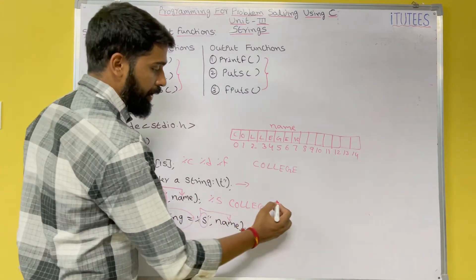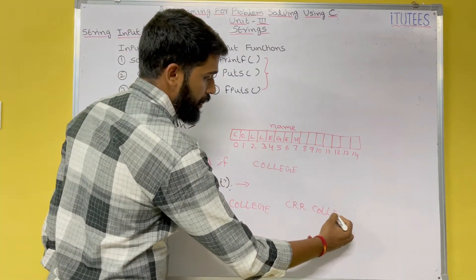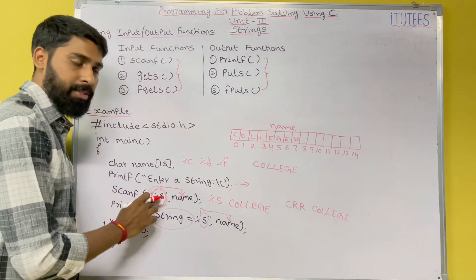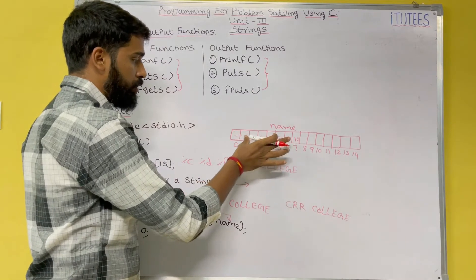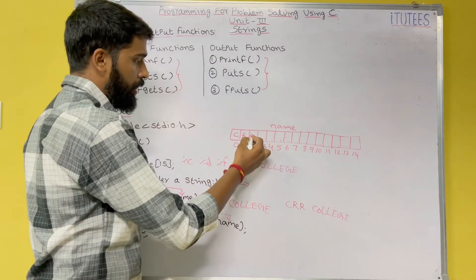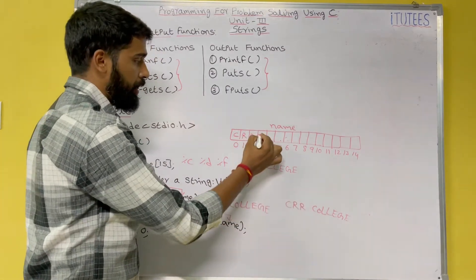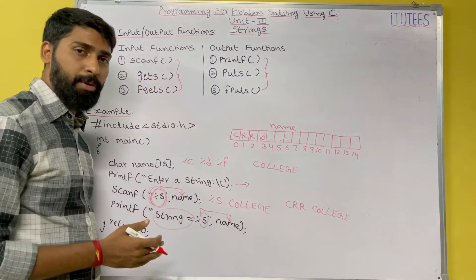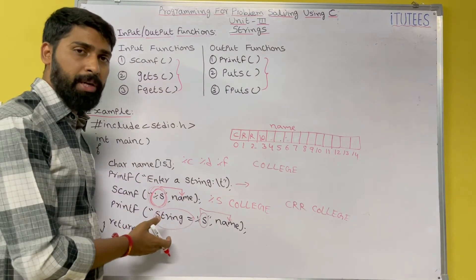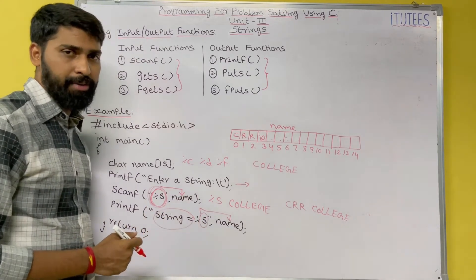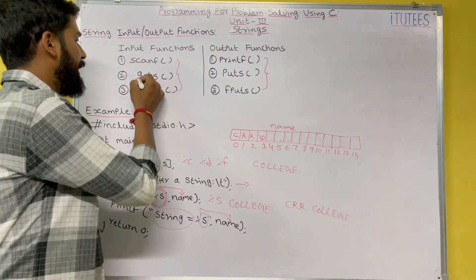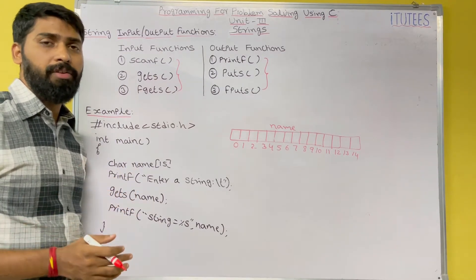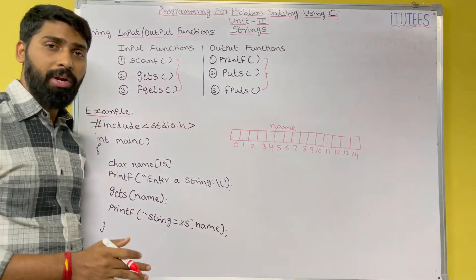Now if I give input like 'crr college', scanf with %s stores only 'crr' — when a space is encountered, it is terminated and \0 is stored there. That means the scanf function reads input from the keyboard until it encounters a space, new line, or end of file. To overcome this problem, we use gets and fgets. The gets function is also used to read the string from the keyboard until it reaches a new line or end of file.